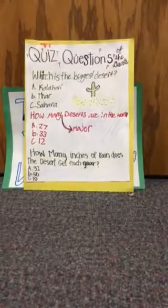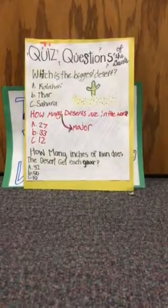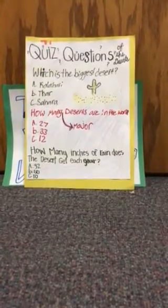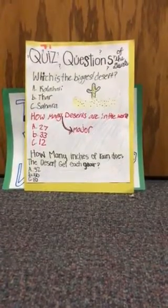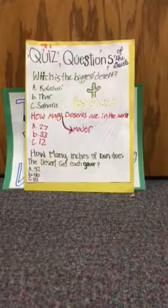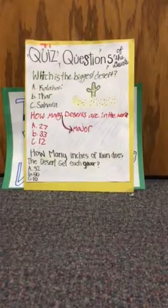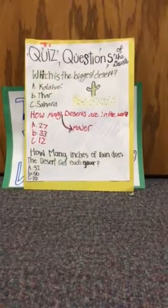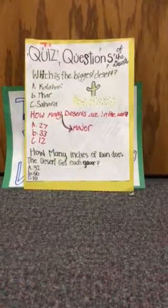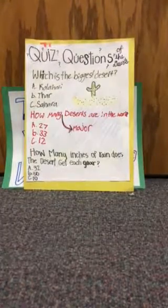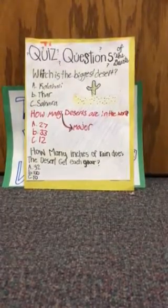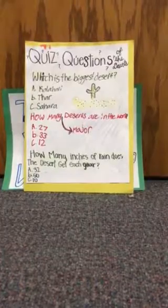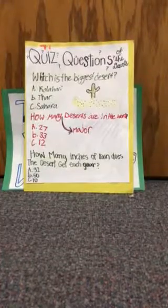Quiz questions of the desert. Which is the biggest desert? A. Kalahari, B. Thar, C. Sahara. How many major deserts are in the world? A. 27, B. 33, or C. 12.